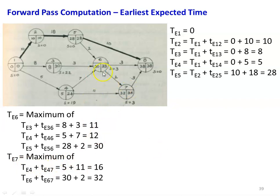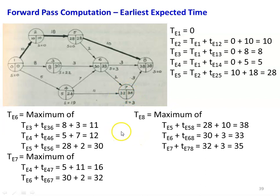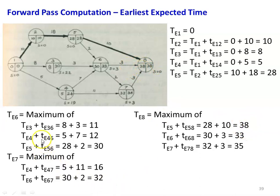TE7: two incoming arrows — maximum of (TE4 plus t(4,7) equals 5 plus 11 equals 16) and (TE6 plus t(6,7) equals 30 plus 2 equals 32). The maximum time is 32, so TE7 equals 32. TE8: three incoming arrows — maximum of (TE5 plus t(5,8) equals 28 plus 10 equals 38), (TE6 plus t(6,8) equals 30 plus 3 equals 33), and (TE7 plus t(7,8) equals 32 plus 3 equals 35). The maximum value is 38, so TE8 equals 38. In the forward pass computation, we have calculated the earliest expected time of all events.